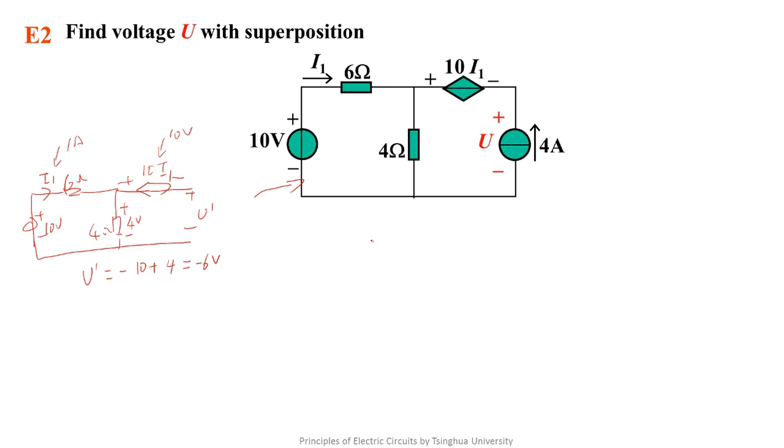When the current source takes effect alone and the voltage source takes no effect, the equivalent circuit is like this. So what's I1? Seeing from the left side of the circuit, the current controlled voltage source has no effect. The series connection of any element and current source is equivalent to the current source for the external circuit.